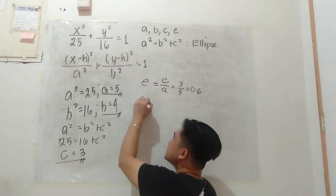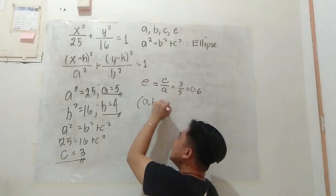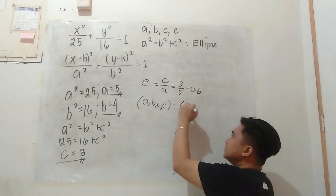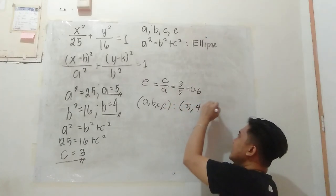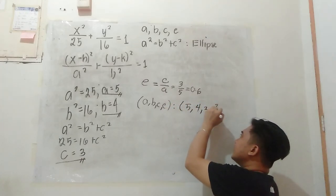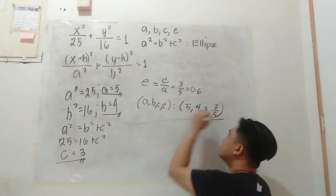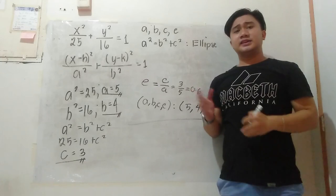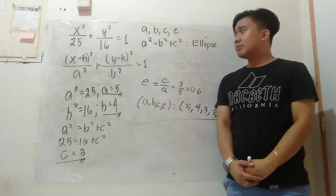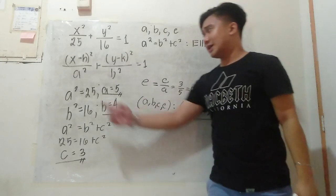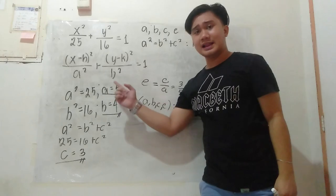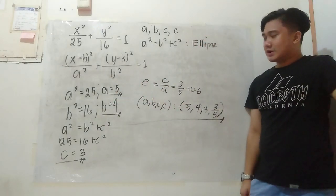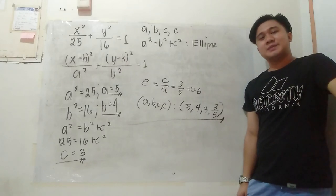So the values are A = 5, B = 4, C = 3, and E = 3/5. That is how easy it is. It is important to know the standard equation because without it, you cannot determine which is A, which is B, which is C, and the eccentricity E.